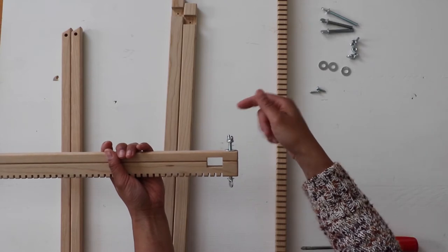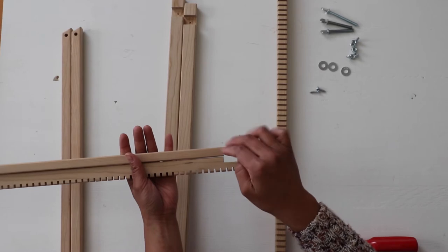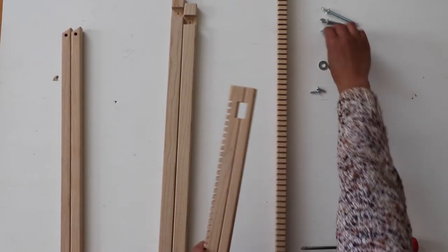And it doesn't need to be tight, just kind of put it on there. It needs to be loose because we're going to end up putting the side frames in there. So let's do the other side.